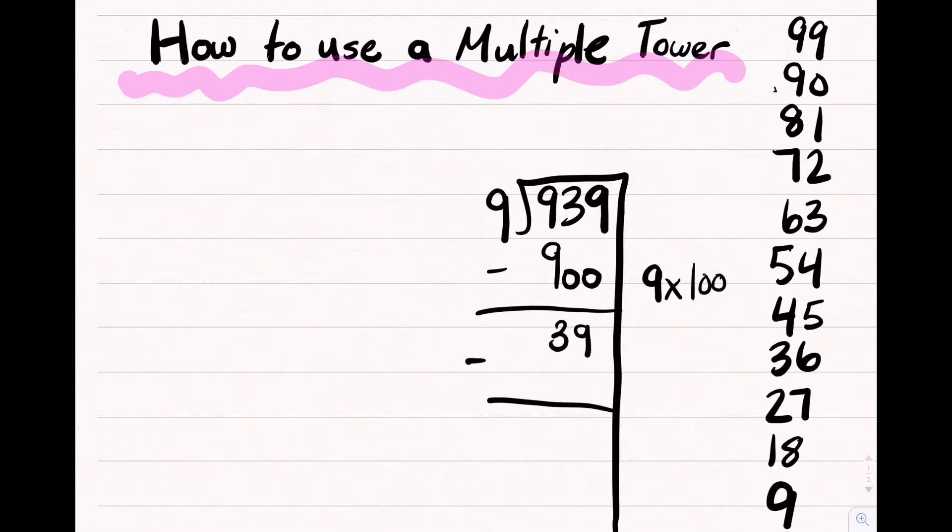After that, you look for the closest number to 39, which is 36. So you do 9 times 4, which equals 36. And then do 39 minus 36, which equals 3. Our answer is 104 remainder 3.